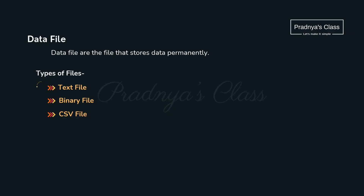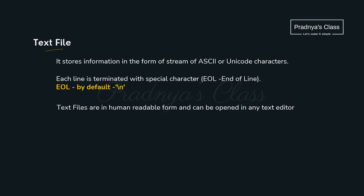According to the syllabus, we must know three types of file: text file, binary file, as well as CSV file. CSV file is a type of text file. But what is a file? It stores data permanently in your disk. In this video, we are going through text file. Text file stores data in the form of ASCII characters or Unicode characters — it will be in the readable format. We can open the text file in any text editor like notepad. Each line in a text file will be ending with the backslash n, and it is called the end of line character.